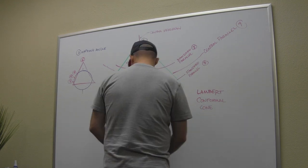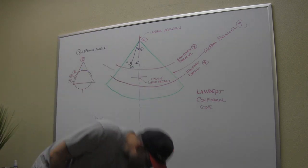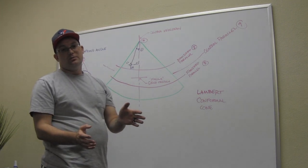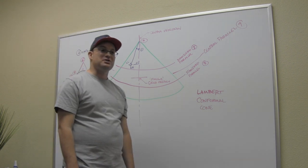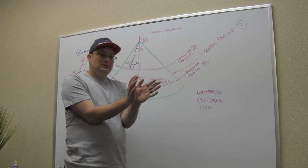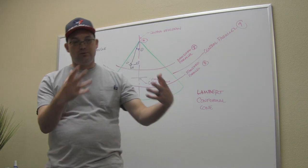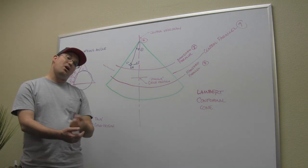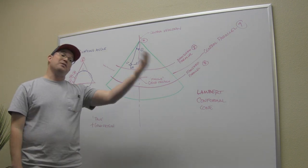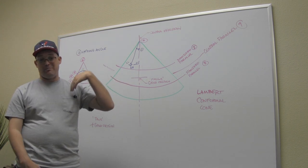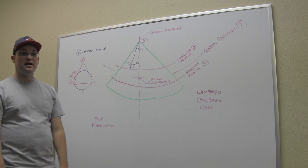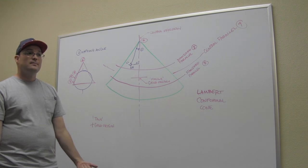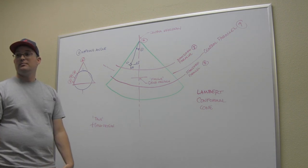This is called Lambert conformal cone. I believe the reason it's called conformal is because the relationship between angles do not change on a conformal projection. So if it's 35 degrees on the cone, it's close to 35 degrees on the surface of the earth.